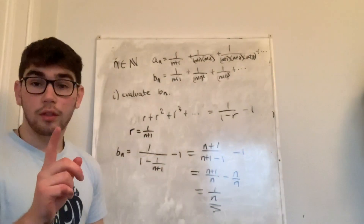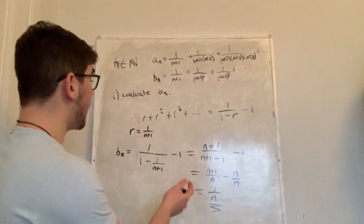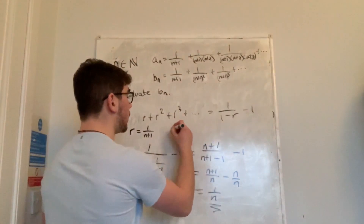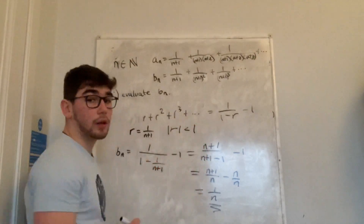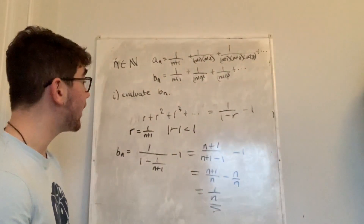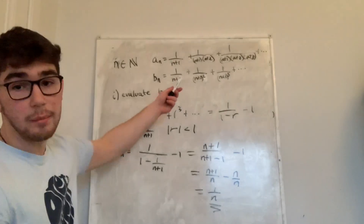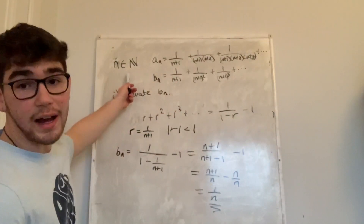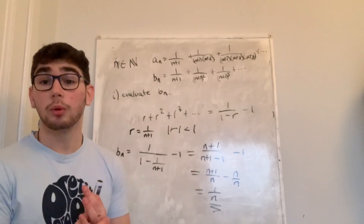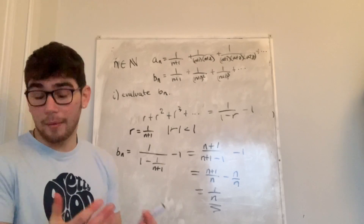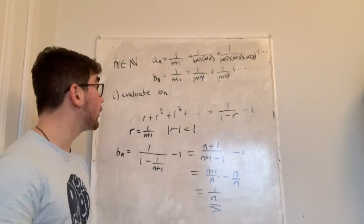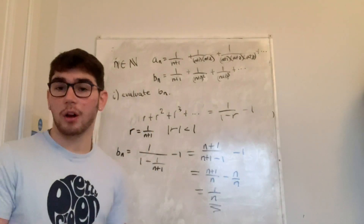One caveat: for the infinite geometric series formula to apply, the absolute value of the ratio r must be less than 1 for the series to converge. Here r = 1/(n+1), and since n is a natural number, 1/(n+1) ≤ 1/2 < 1, so the series does converge. That confirms bₙ = 1/n.